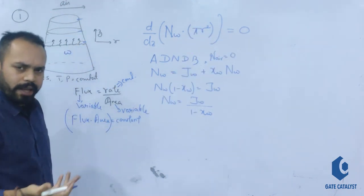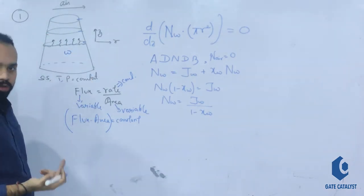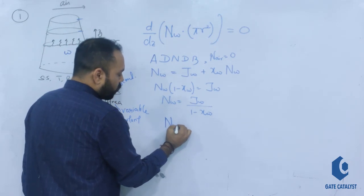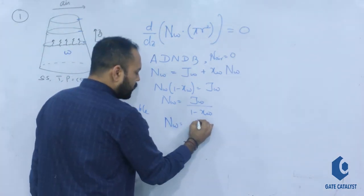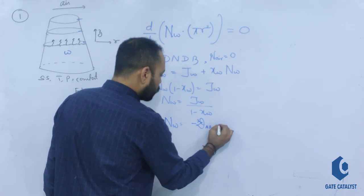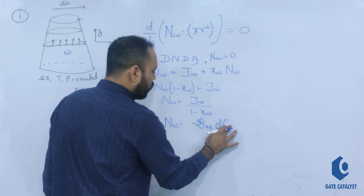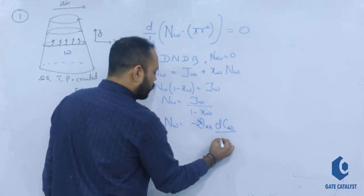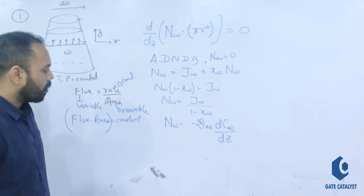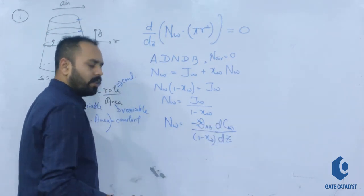The question asks: d/dZ of (N_W × π R²) = 0. Note that π is constant but R² cannot be taken outside d/dZ because R is a function of Z. Using Fick's law, J_W = −D_AB × dC_W/dZ, so N_W = −D_AB (dC_W/dZ) / (1 − x_W).